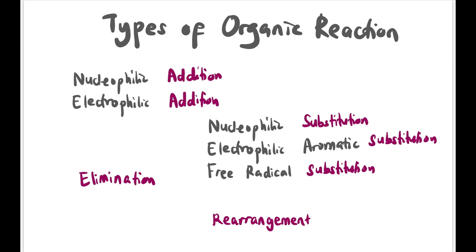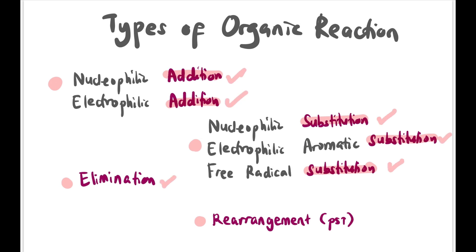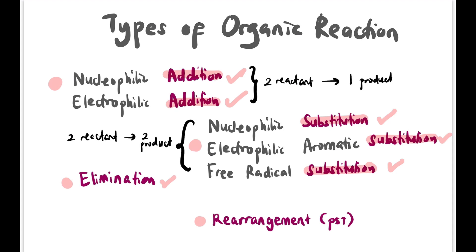Now we've learned nucleophile and electrophile. It's time to learn the types of organic reactions. Generally, there are 4 types: addition, substitution, elimination, and rearrangement — but rearrangement is not included in the syllabus. Quick tips: addition involves 2 reactants producing 1 product; substitution involves 2 reactants producing 2 products with functional group exchange; elimination involves a bond changing from single to double or double to triple.